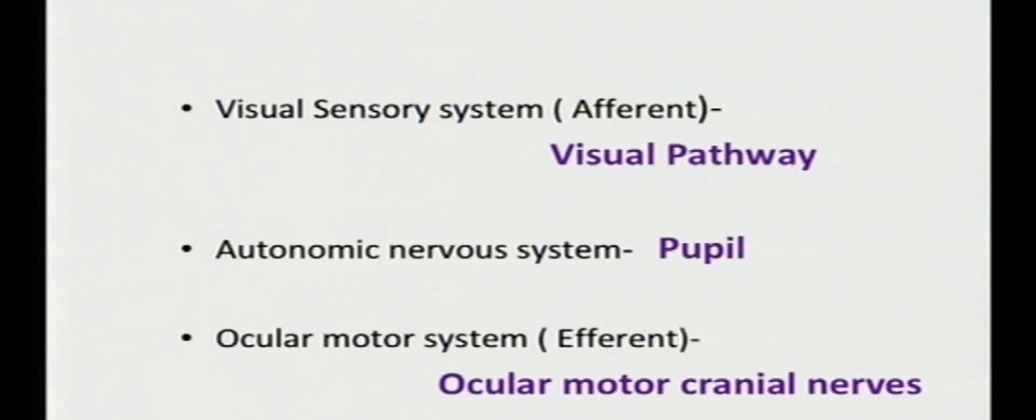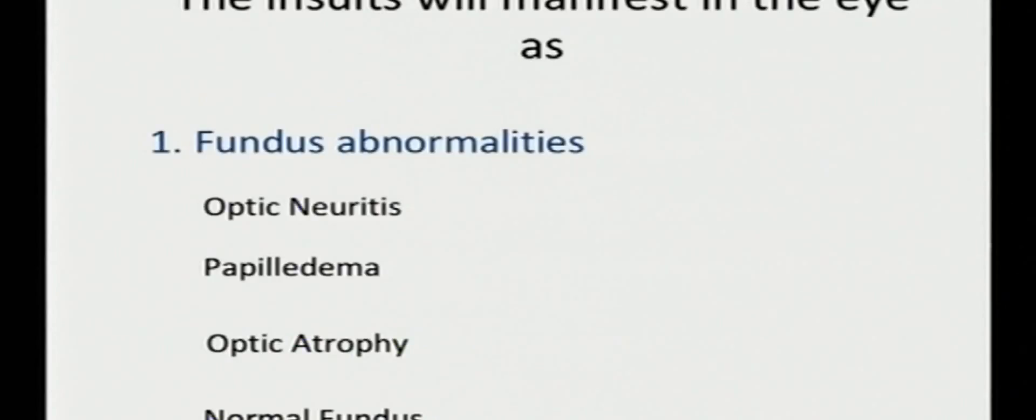Let us have few case-based discussions. In the central nervous system, in the afferent pathway, the visual pathway gets affected. Pupil will be affected in the autonomous nervous system and ocular motor cranial nerves will be affected in the efferent pathway. The insults will manifest as fundus abnormalities such as optic neuritis or papilledema or optic atrophy and even a normal fundus could be there with an underlying neurological pathology.